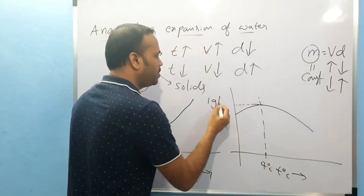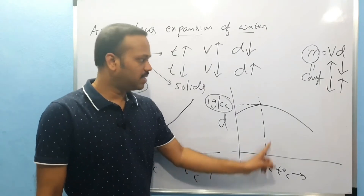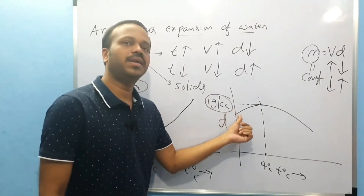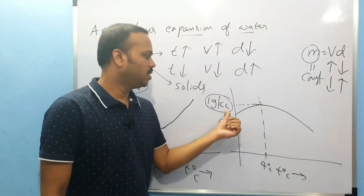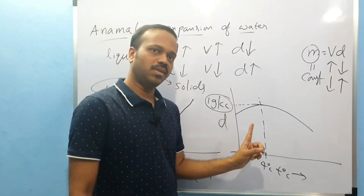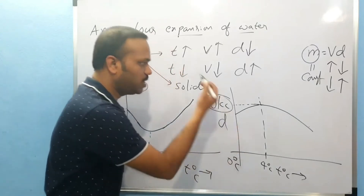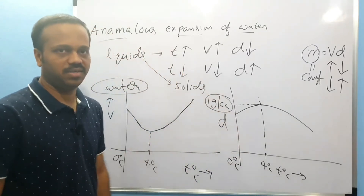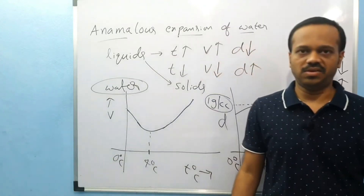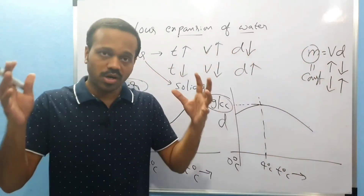What is the density of water? 1 gram per cc. If the density of water is maximum at 4 degrees, it will not be low below 4 degrees normally. Below 4 degrees, if you decrease the temperature, volume — I mean water — expands. Actually, if you decrease the temperature, water should contract.